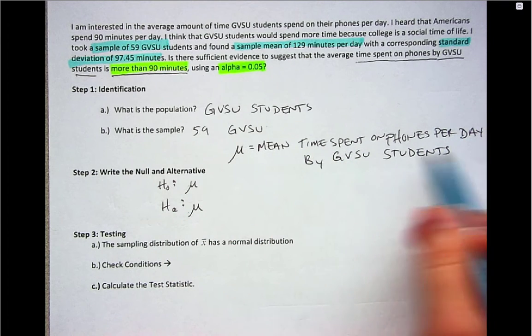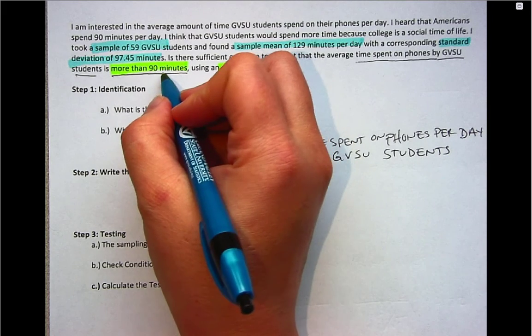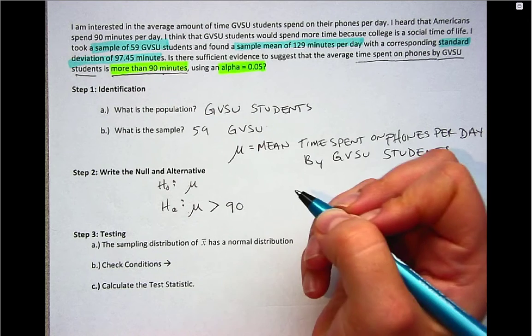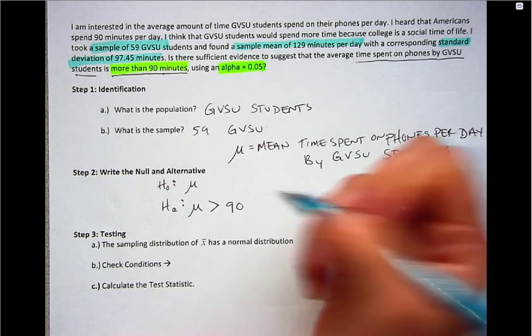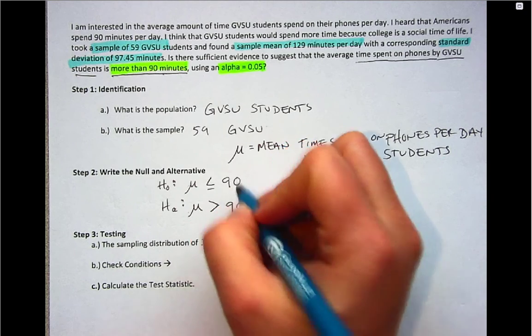Mean time spent on phones per day by GVSU students. We want to show that it's more than 90 minutes. That's our research hypothesis or our alternative. So mu is greater than 90 is the alternative. So the null is mu less than or equal to 90.